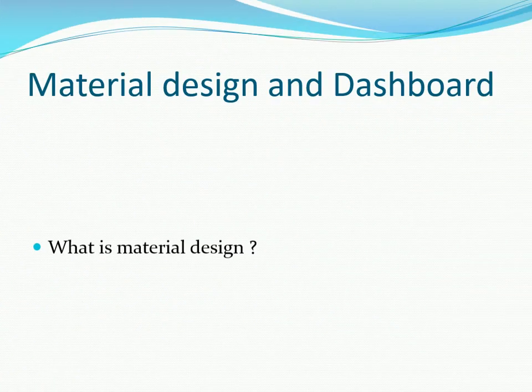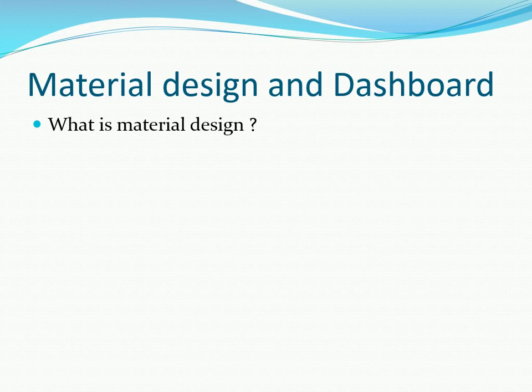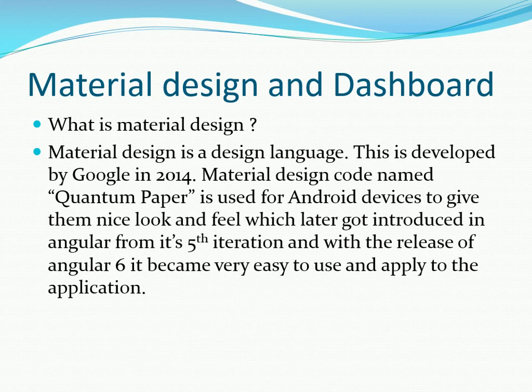Let's start with Material Design. Material Design is a design language which was developed by Google in 2014. Material Design, code named Quantum Paper, was used for Android devices to give them a nice look and feel, which later got introduced in Angular from its fifth iteration. And with the release of Angular 6, it became very easy to use and apply to the application.